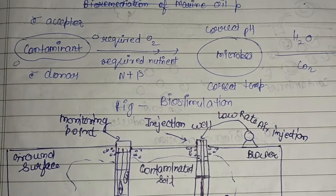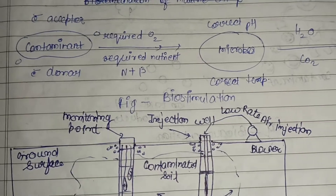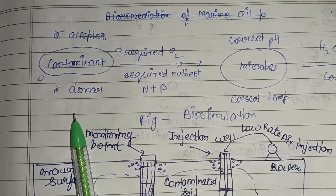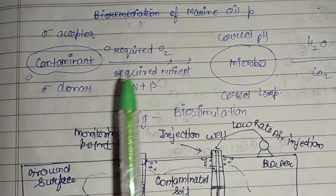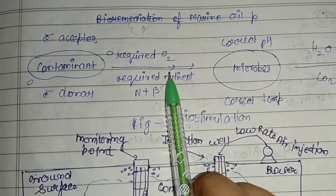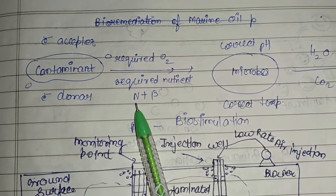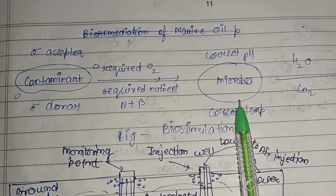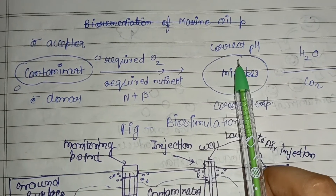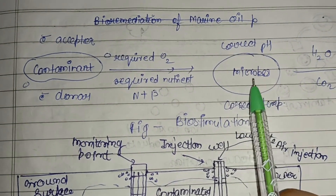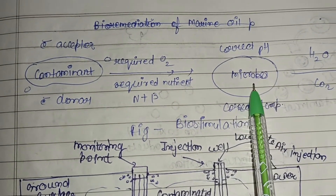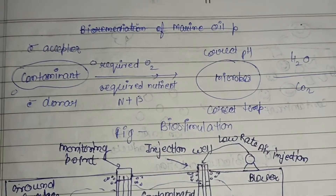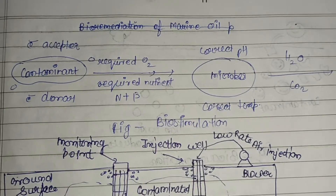This diagram represents biostimulation. A contaminant is present along with an electron acceptor or electron donor, and oxygen is also required. Nutrients such as nitrogen and phosphorus are given to microbes for their proper growth, requiring correct pH and correct temperature for their remediation activity. The end products released are H₂O and CO₂.